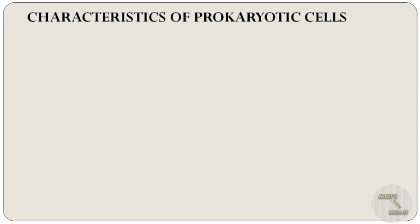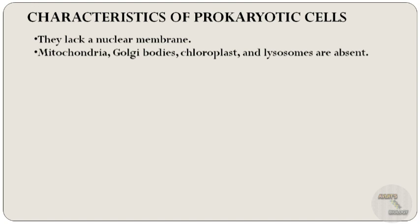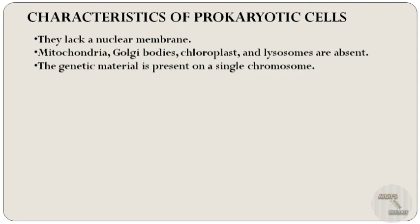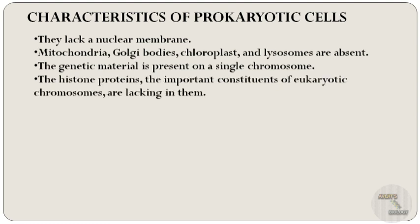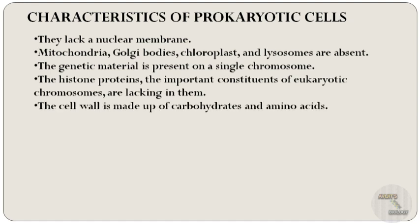Now let's discuss about the characteristics of prokaryotic cells. First, prokaryotic cells lack a nuclear membrane. Mitochondria, Golgi bodies, chloroplasts, and lysosomes are absent in prokaryotic cells. The genetic material of prokaryotes is present on a single chromosome. The histone proteins, which are important constituents of eukaryotic chromosomes, are lacking in them.